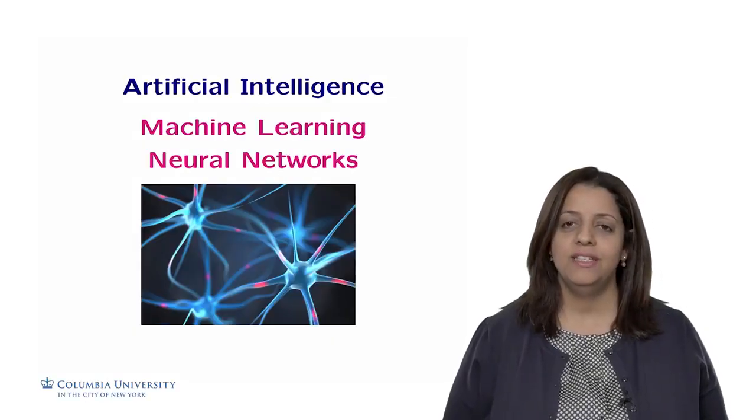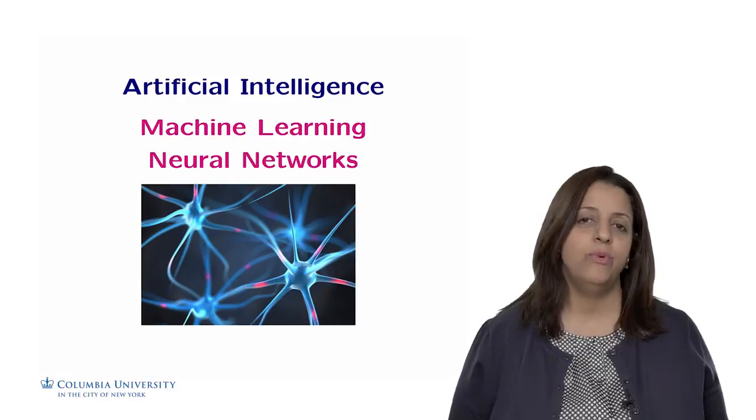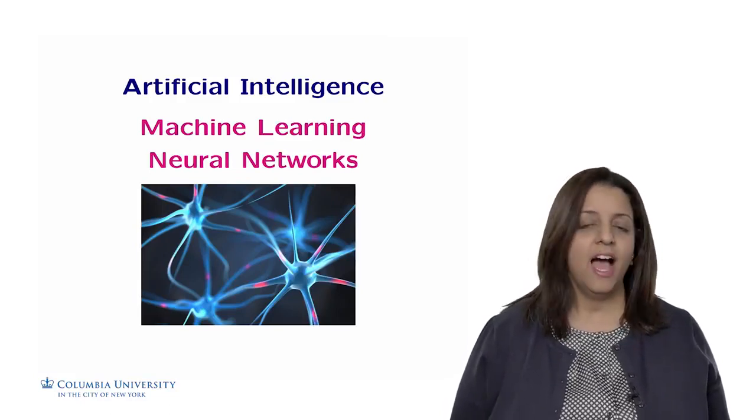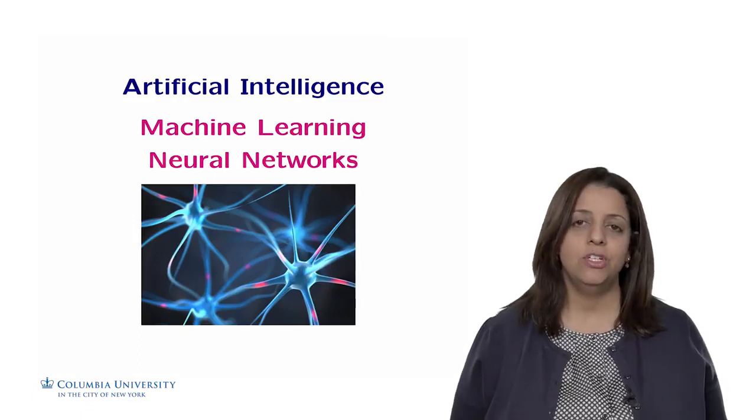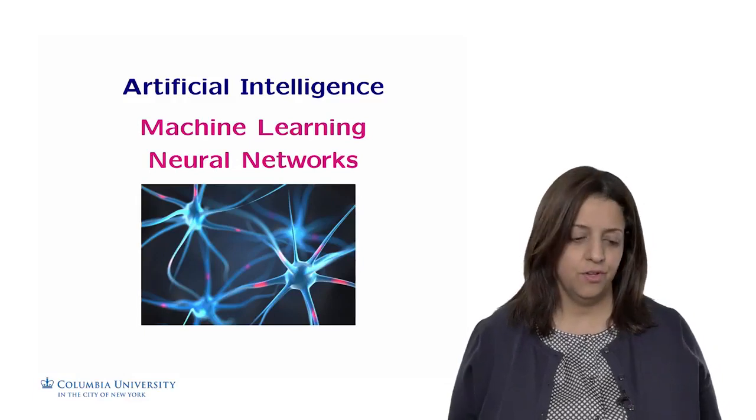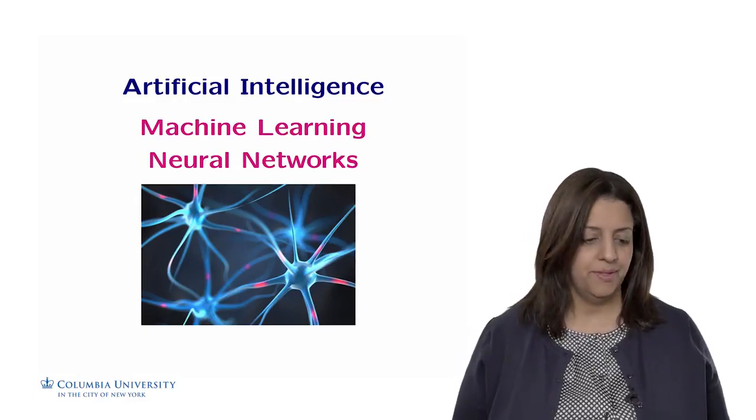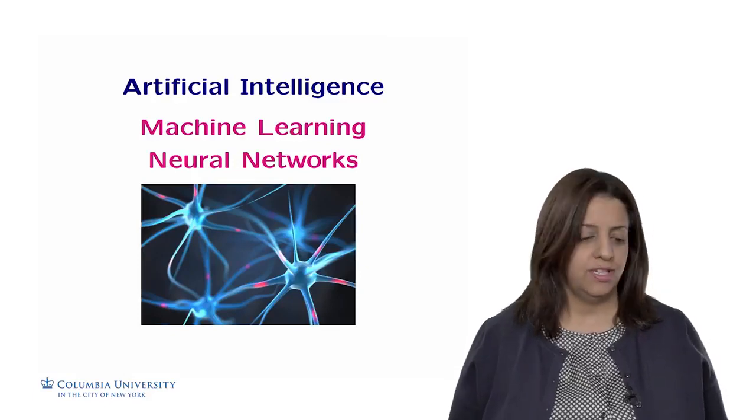Our lecture today is about neural networks, a family of algorithms that try to mimic how the brain functions. As we have seen before, our brain is a network of neurons, and each neuron is connected to between tens and tens of thousands of other neurons that communicate between them. Some information is being transferred from one neuron to another one.